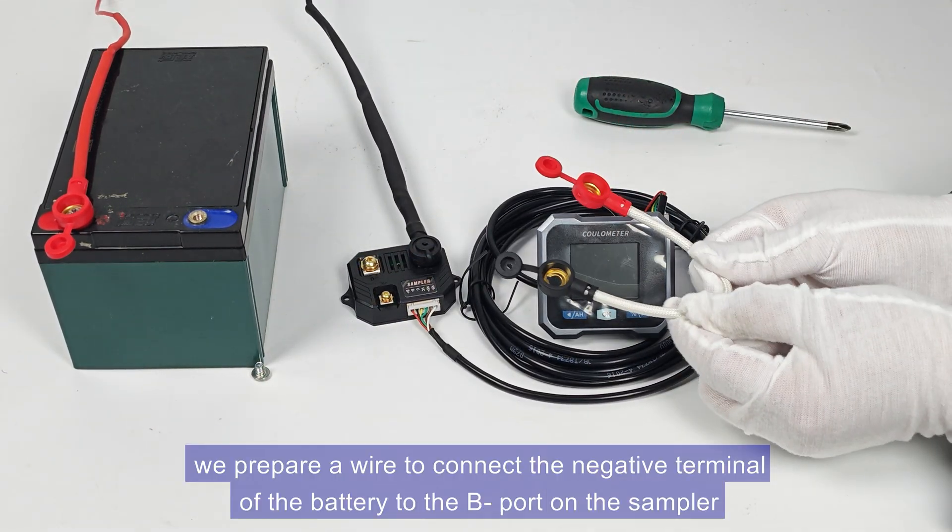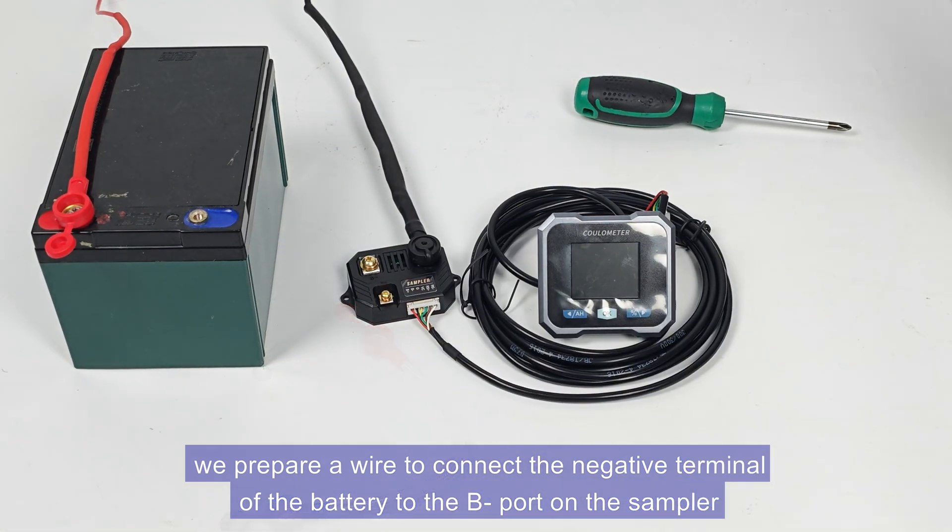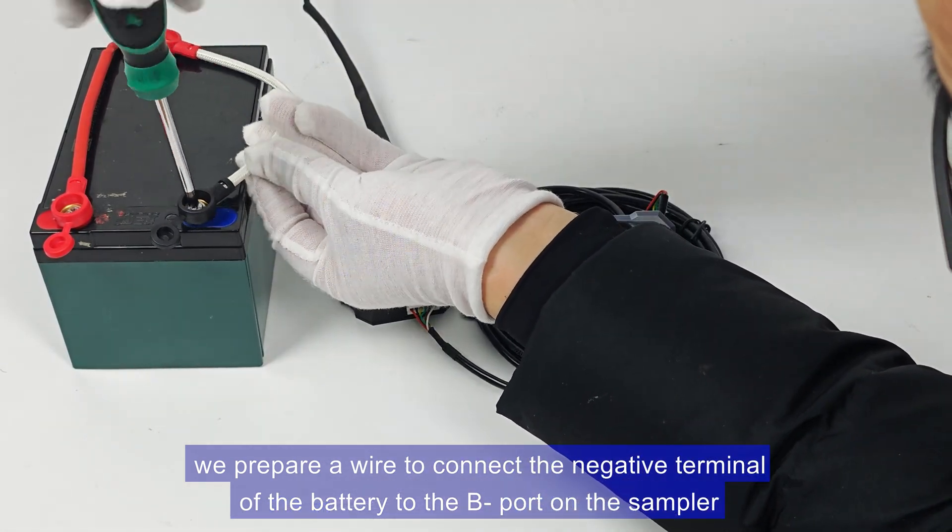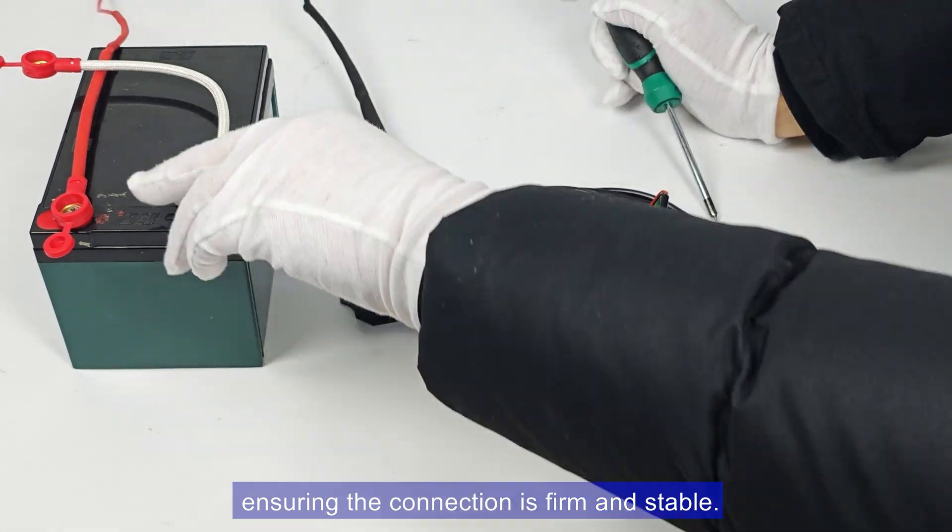Next, we prepare a wire to connect the negative terminal of the battery to the B port on the sampler, ensuring the connection is firm and stable.